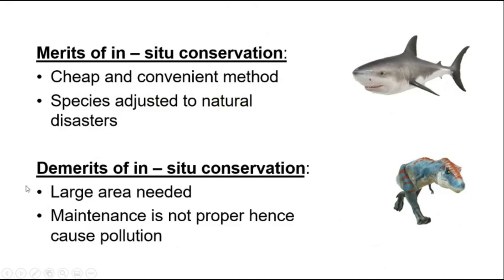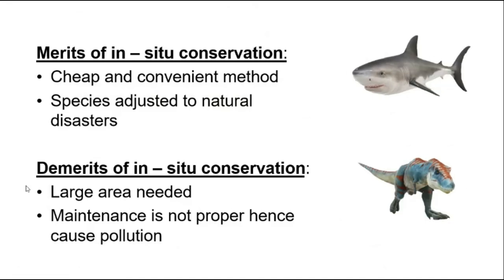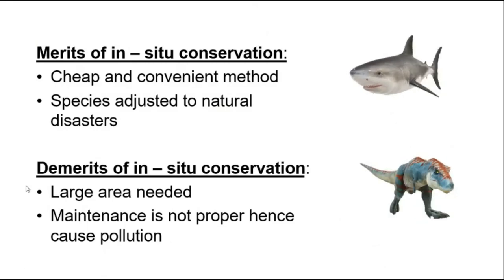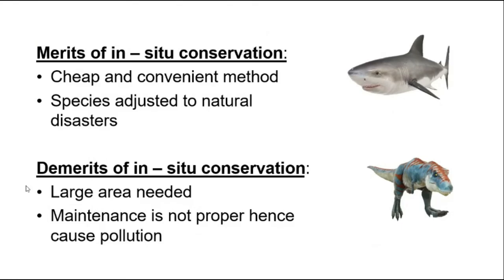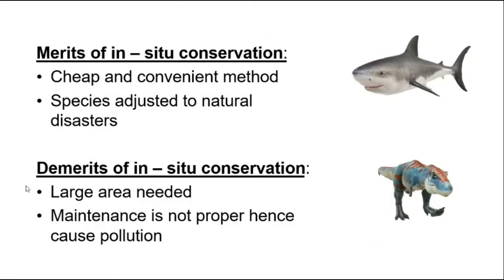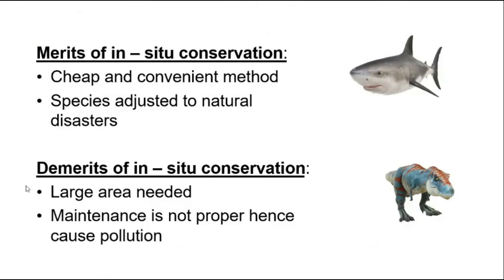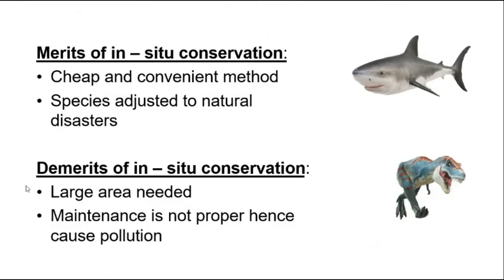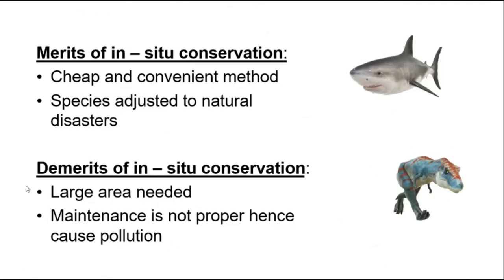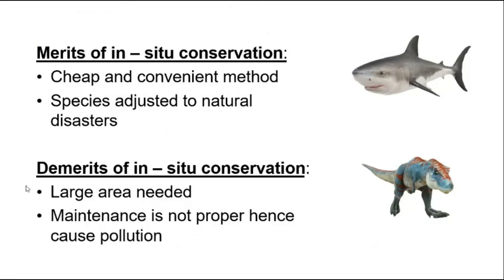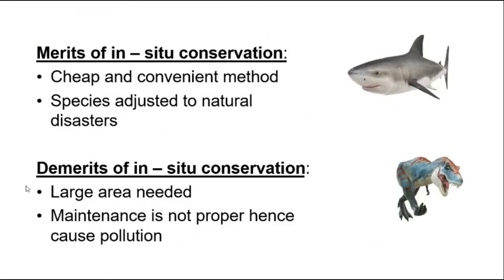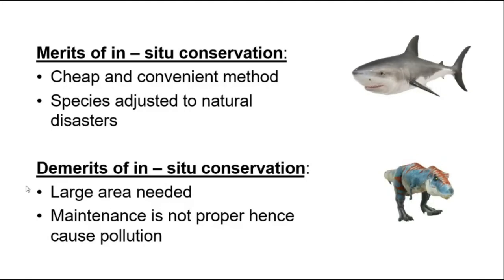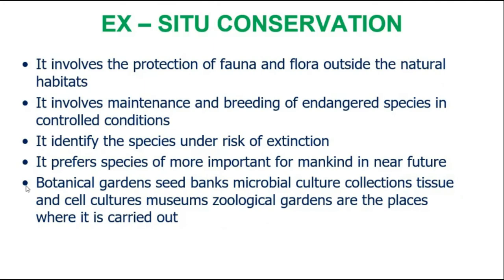In situ conservation is cheap and convenient. It is well-adjusted to natural disasters — if there is flooding or drought, species adjust and evolve naturally. However, the demerit is that it needs a large area for conservation, and maintenance can be costly due to pollution and other factors.